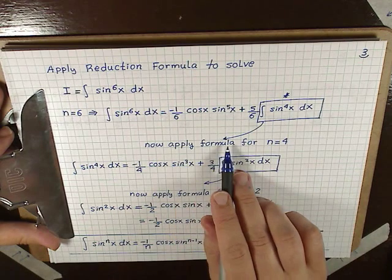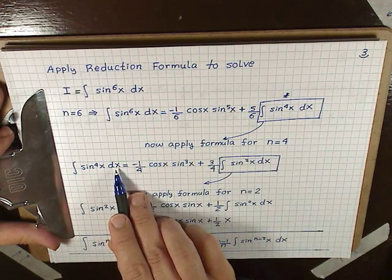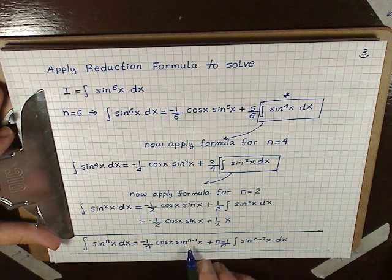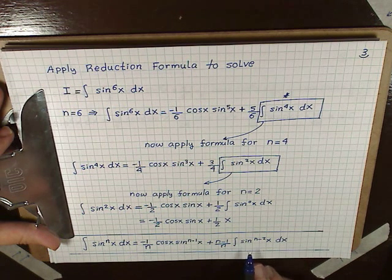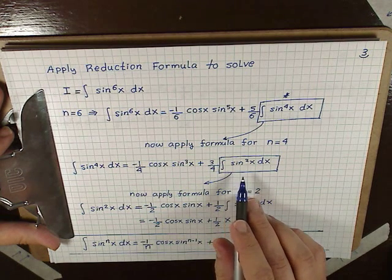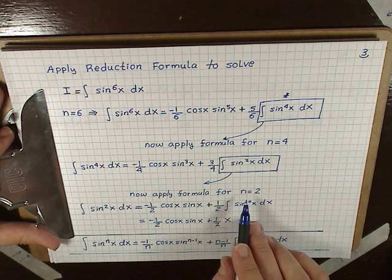We reapply the formula for n = 4. The integral of sin^4(x) dx = -1/4 cos(x) sin³(x) plus (4-1)/4 = 3/4 times the integral of sin²(x) dx. Let's reapply the formula for the integral of sin²(x) dx by plugging in n = 2.